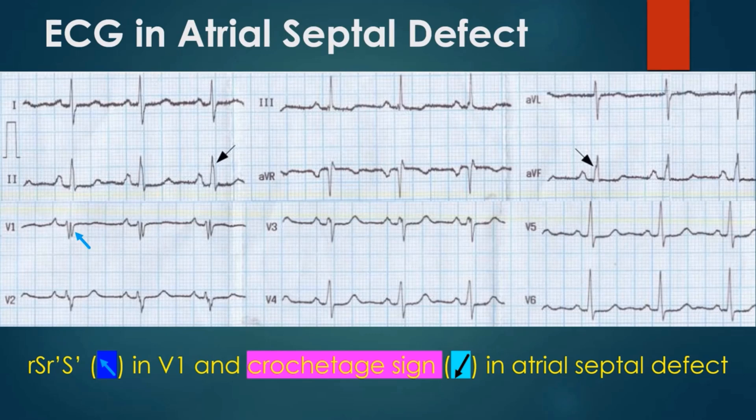The crochet touch sign in atrial septal defect was described by Heller and Associates in 1996. It is a notch near the apex of the R wave in inferior leads. They noted a sensitivity of about 73% and specificity of 92% if the sign was present in all three inferior leads. Early disappearance of the crochet touch sign after surgical correction of atrial septal defect was found in 35% of cases, even when the incomplete right bundle branch block pattern persists.